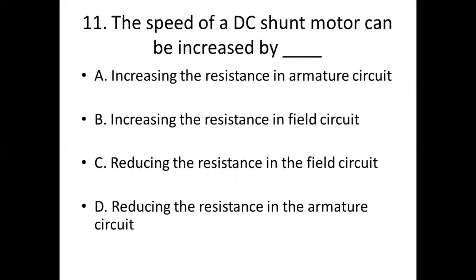Eleventh bit. The speed of a DC shunt motor can be increased by dash. Option A: increasing the resistance in the armature circuit. Option B: increasing the resistance in the field circuit. Option C: reducing the resistance in the field circuit. Option D: reducing the resistance in the armature circuit. Answer: Option B, increasing the resistance in the field circuit.